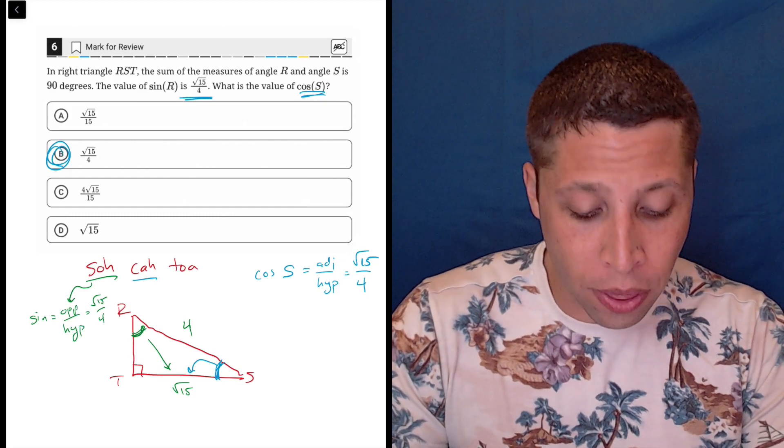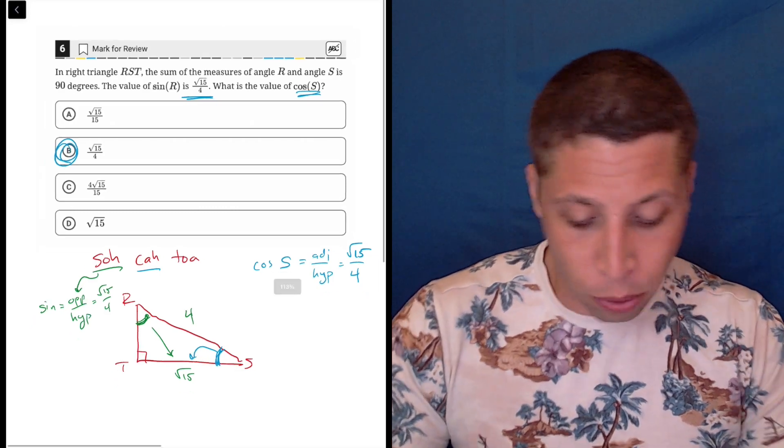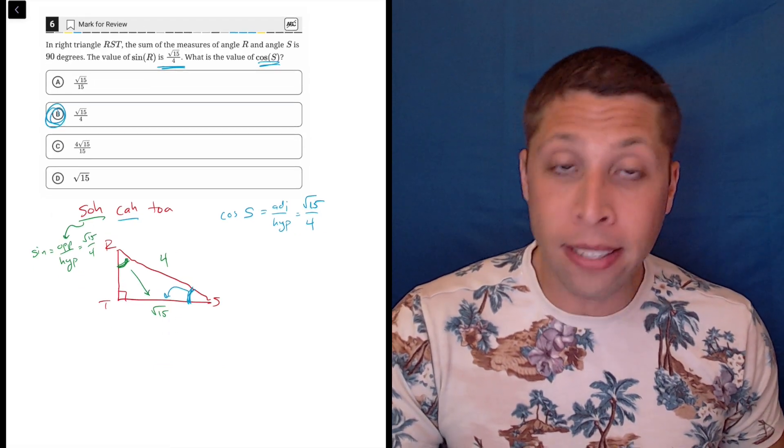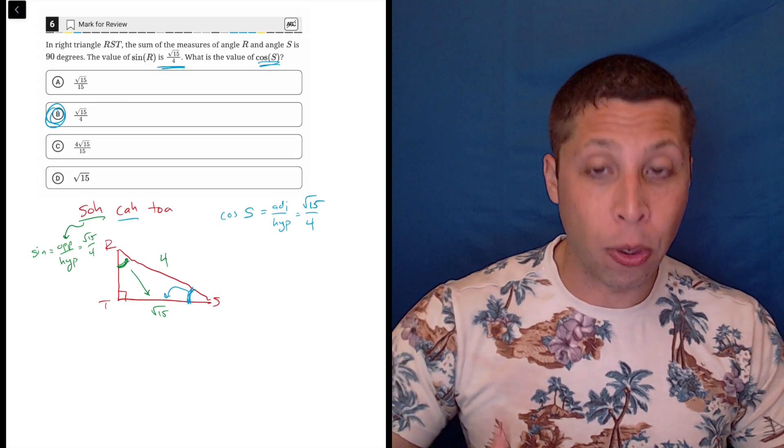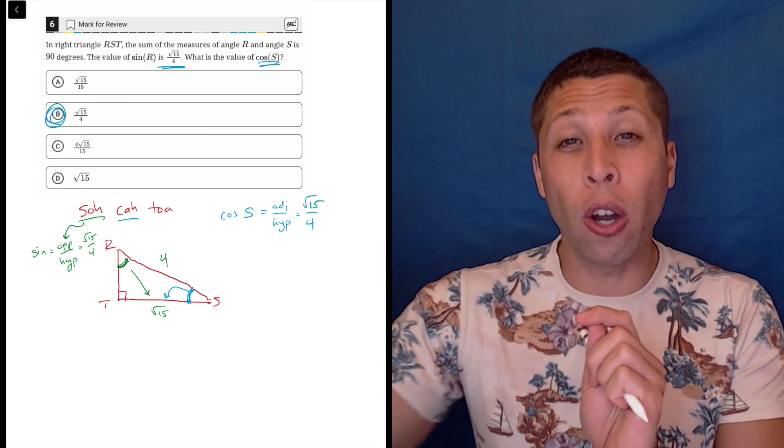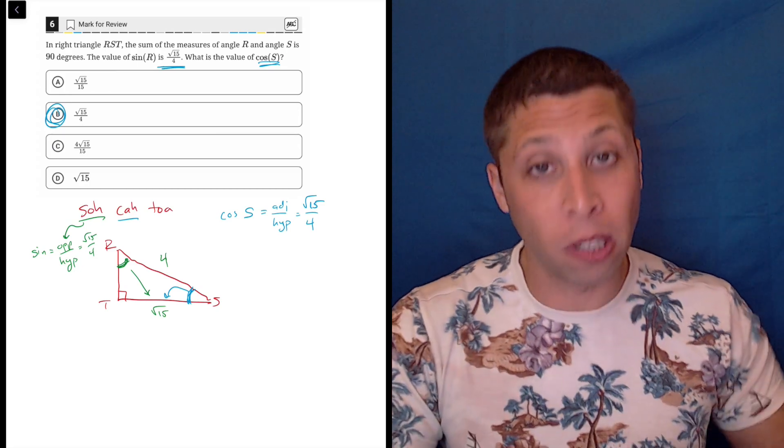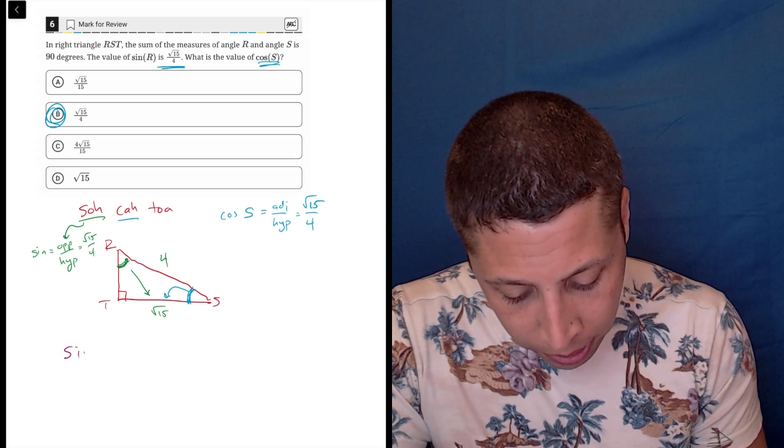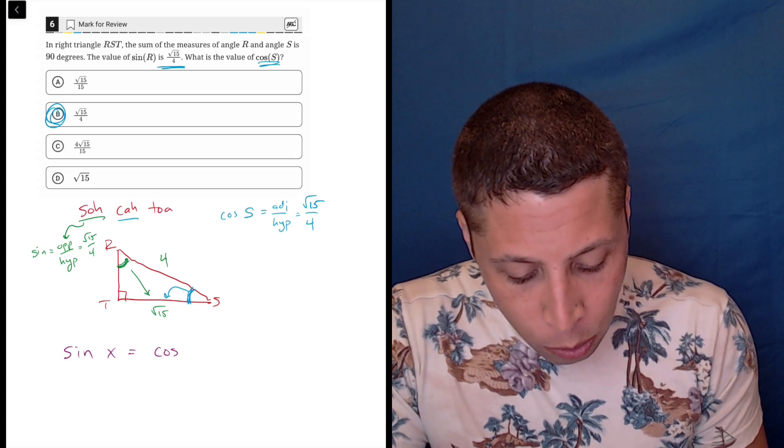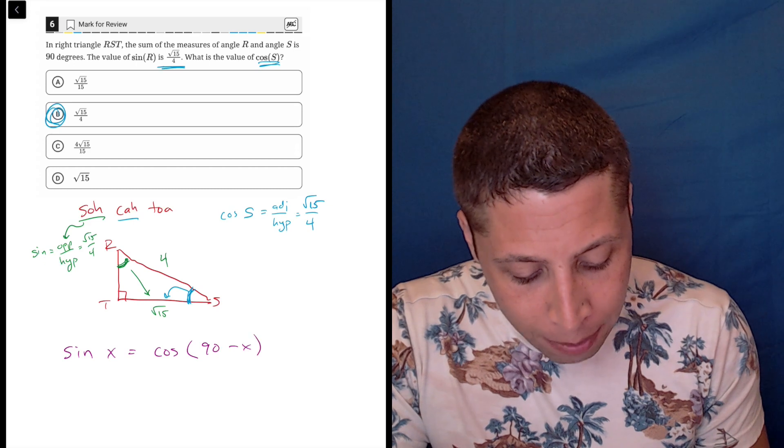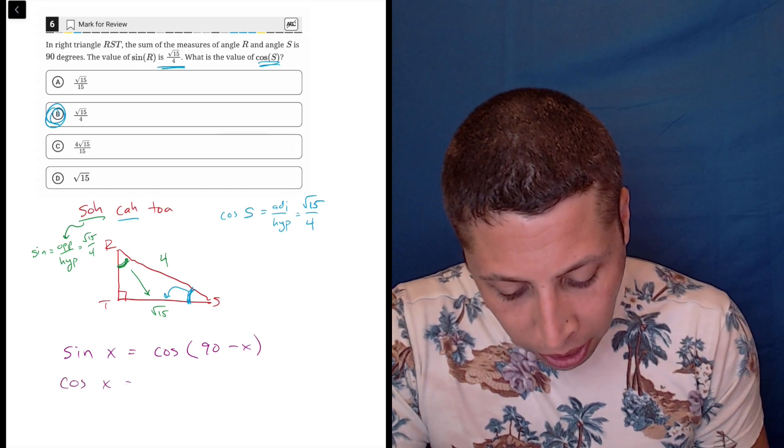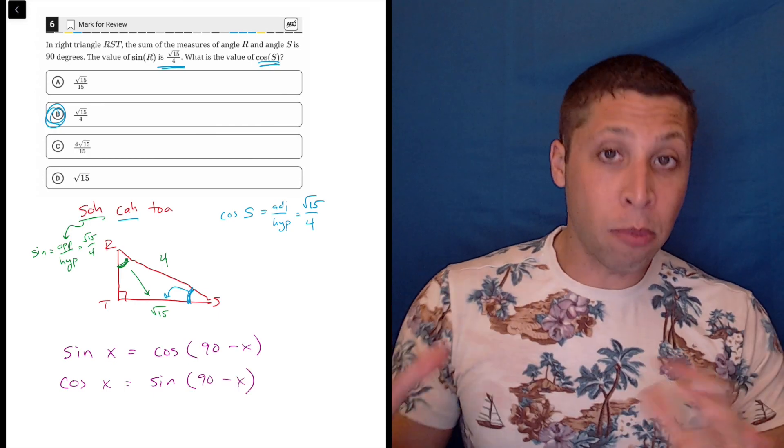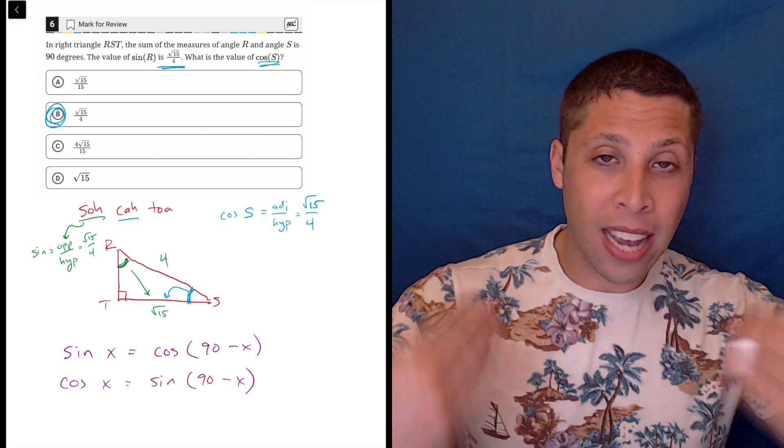The other way to think about this, the shortcut, is that besides SOHCAHTOA, there's another formula or rule that the SAT does ask about from time to time. We don't always need to go this route, but occasionally on the old SAT, this other formula was the only way to get it and regular SOHCAHTOA wouldn't work. But let me explain what it is. Basically, sine of x is equal to the cosine of 90 minus x. Or the opposite, cosine of x is equal to the sine of 90 minus x. And so this seems confusing, but it's basically telling us what we just figured out.